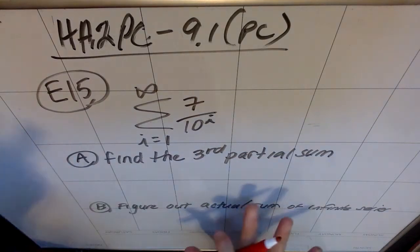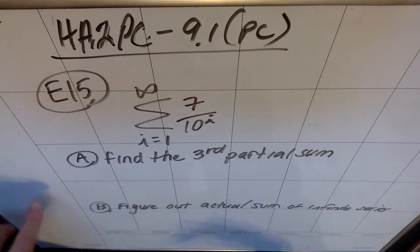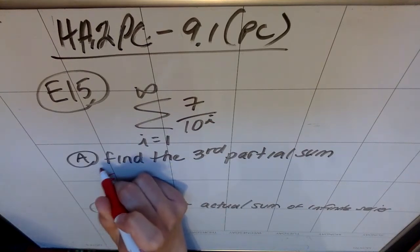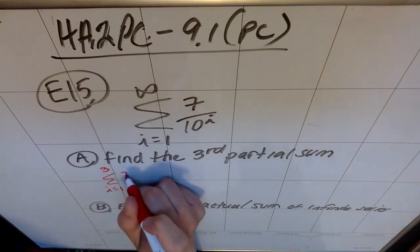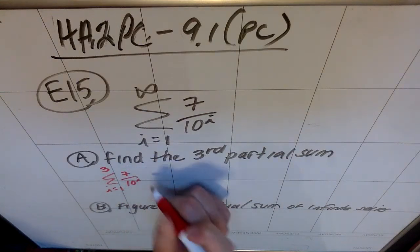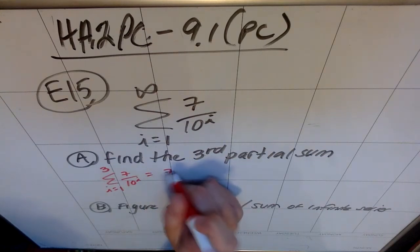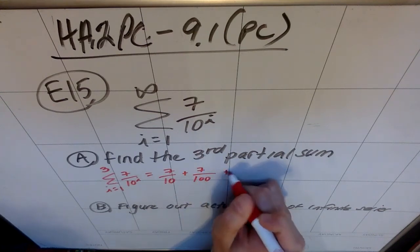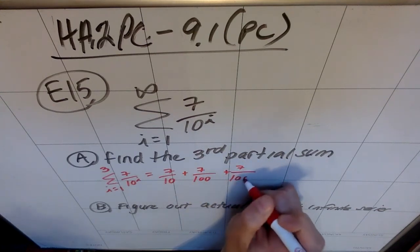So let's find the third partial sum first. And I think once we find that we're going to be able to start to find some patterns. So what the third partial sum is going to look like, this third partial sum would be the sum from i is 1 to 3 of 7 over 10 to the i. So what that's going to look like is a 7 over 10 to the first, plus a 7 over 10 to the second, plus a 7 over 10 to the third.